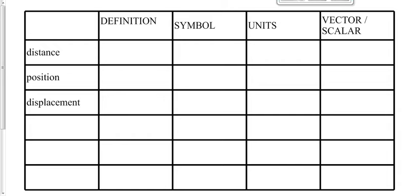What's the symbol for distance? It's delta D. What does the delta mean — the little triangle? It means change. So if you've traveled a distance, it's inferring that you've changed where you are. Distance is delta D, and the standard units would be meters.